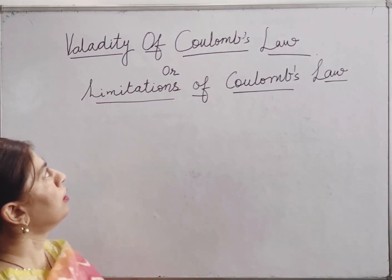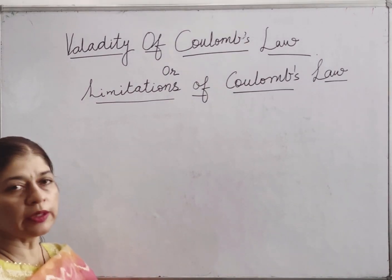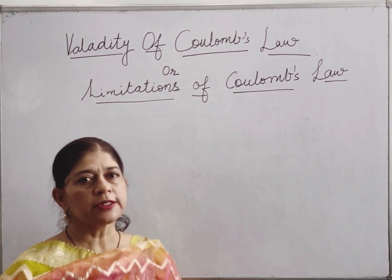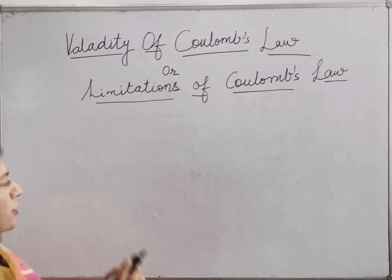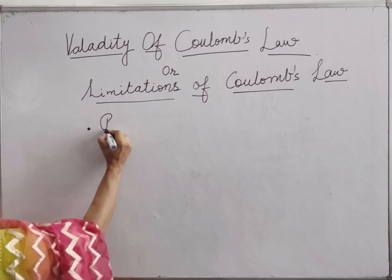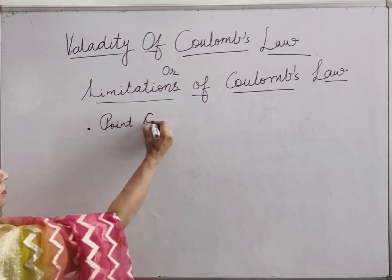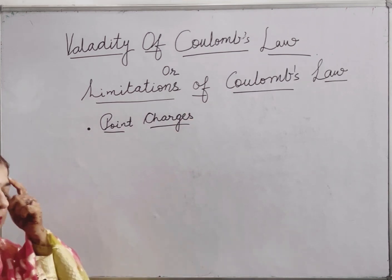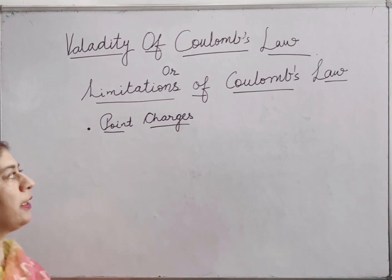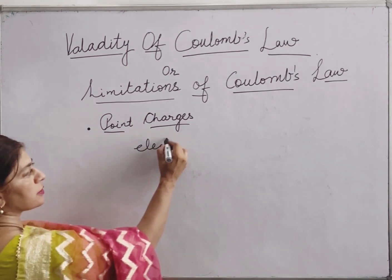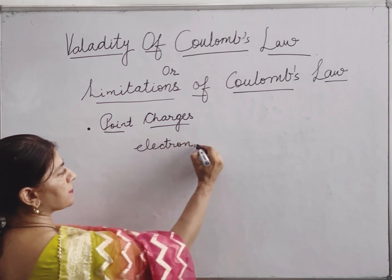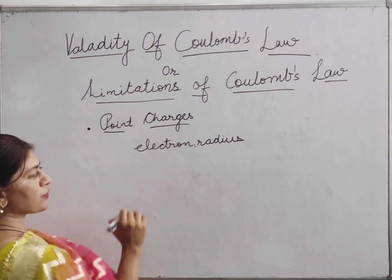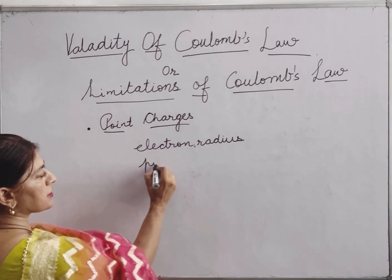Our topic is the validity of Coulomb's law, or the limitations of applying Coulomb's law. Coulomb's law is applicable to point charges. The meaning of point charges is that the size of the charge is very small — it is of the size of the electron radius, or its position in space is a point.